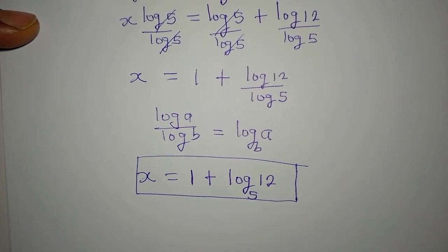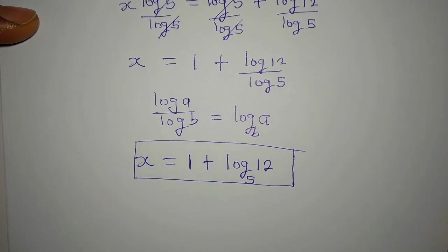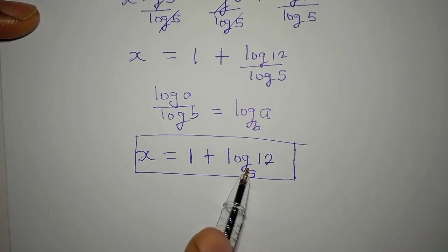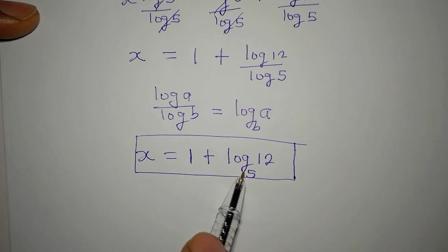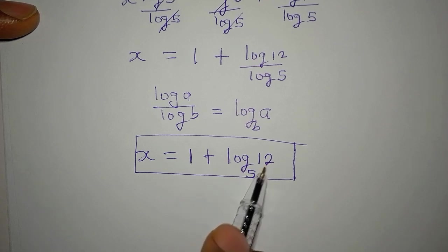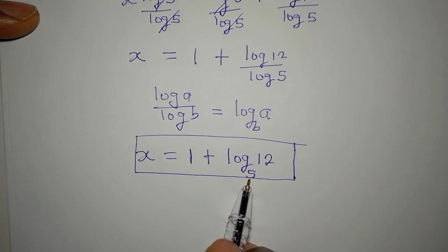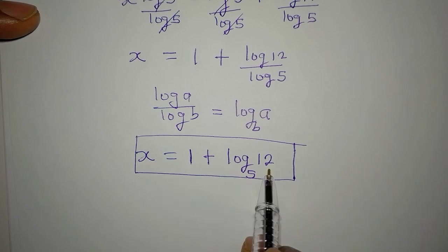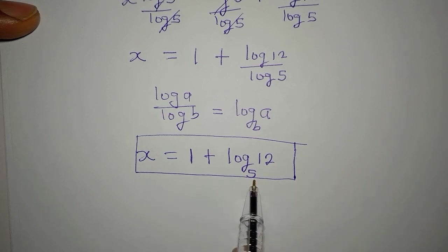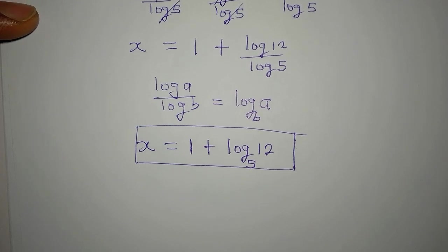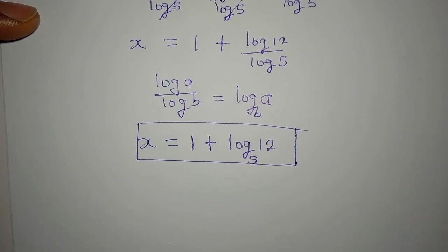So x equals 1 plus log 12 to base 5. This is the value of x. If you want, you can press your calculator to get the numerical answer for log 12 to base 5. If your calculator does not support base 5 directly, you can press log 12 divided by log 5.